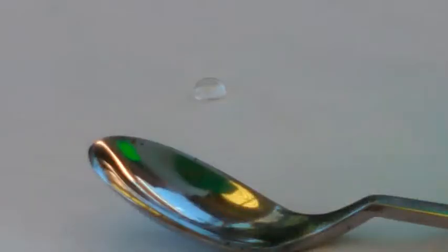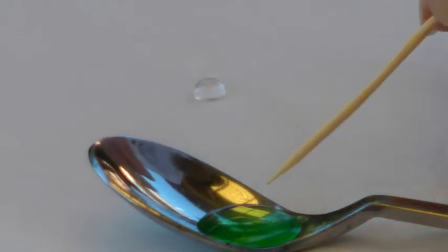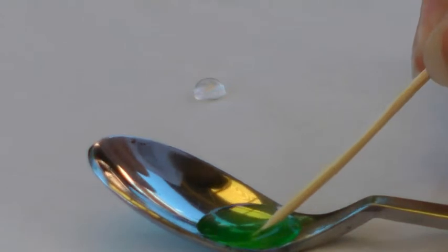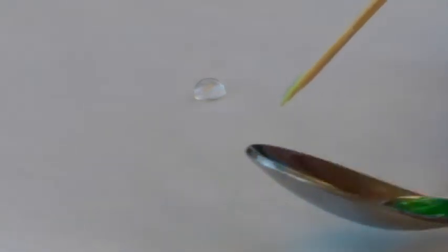Detergents increase the wetness of water, meaning that the cohesive force of water and surface tension decrease. A toothpick dipped into some detergent when introduced into a water droplet changes the shape of that droplet noticeably.